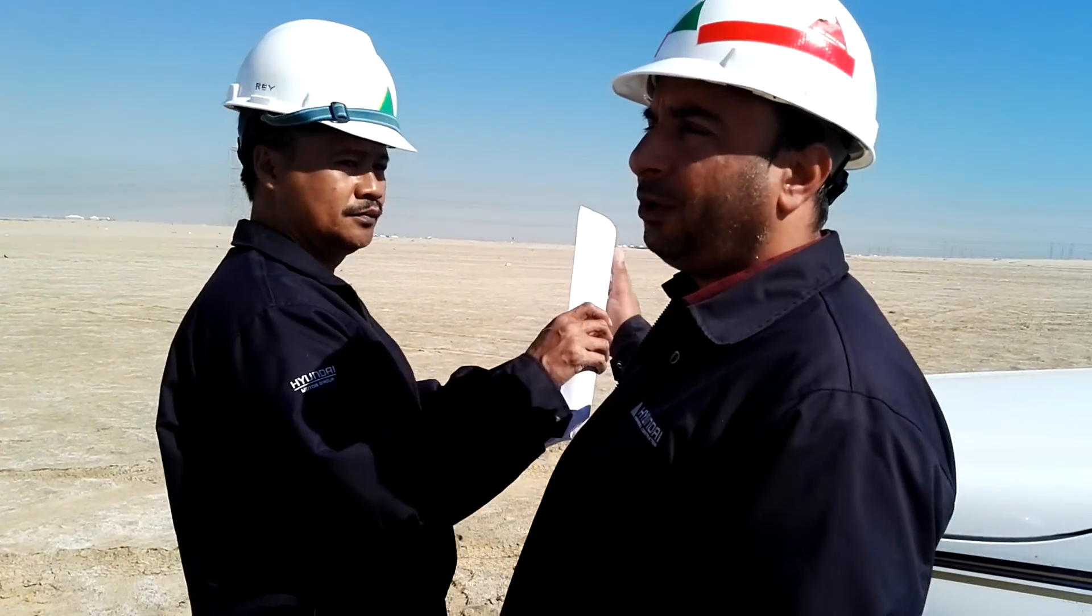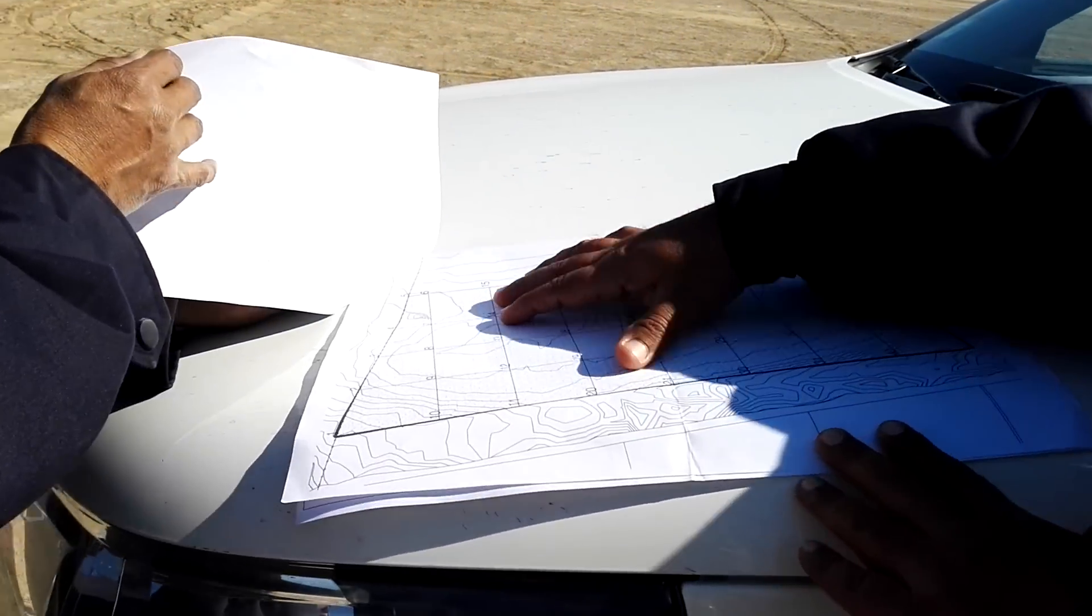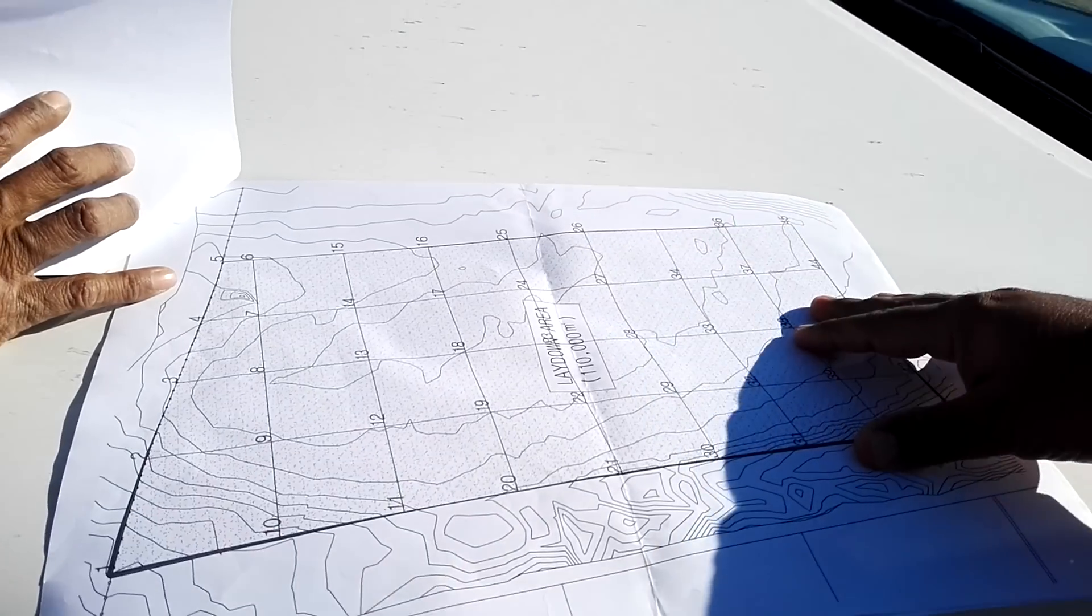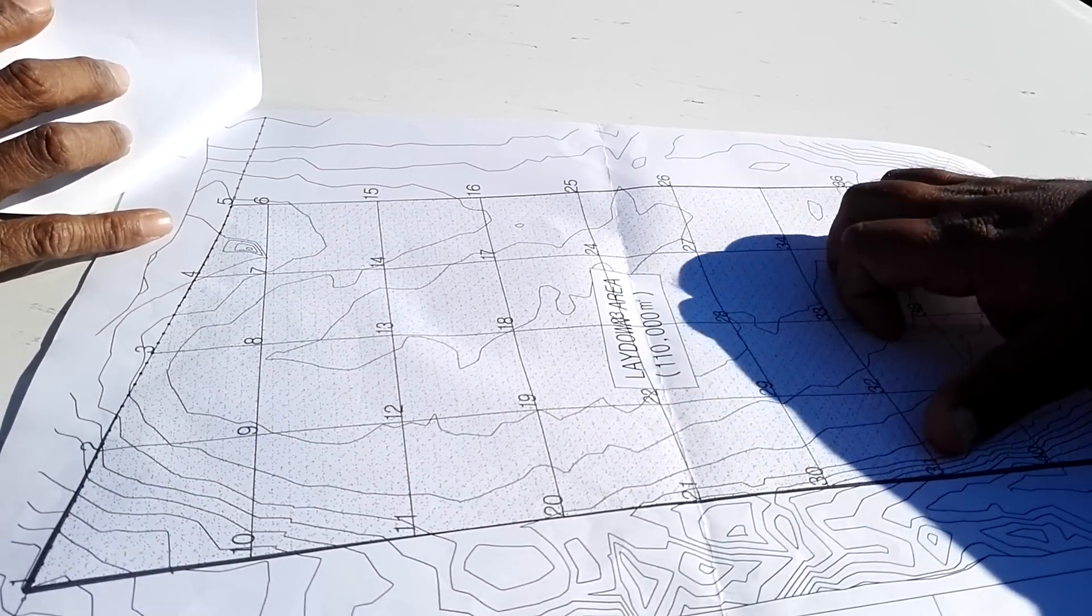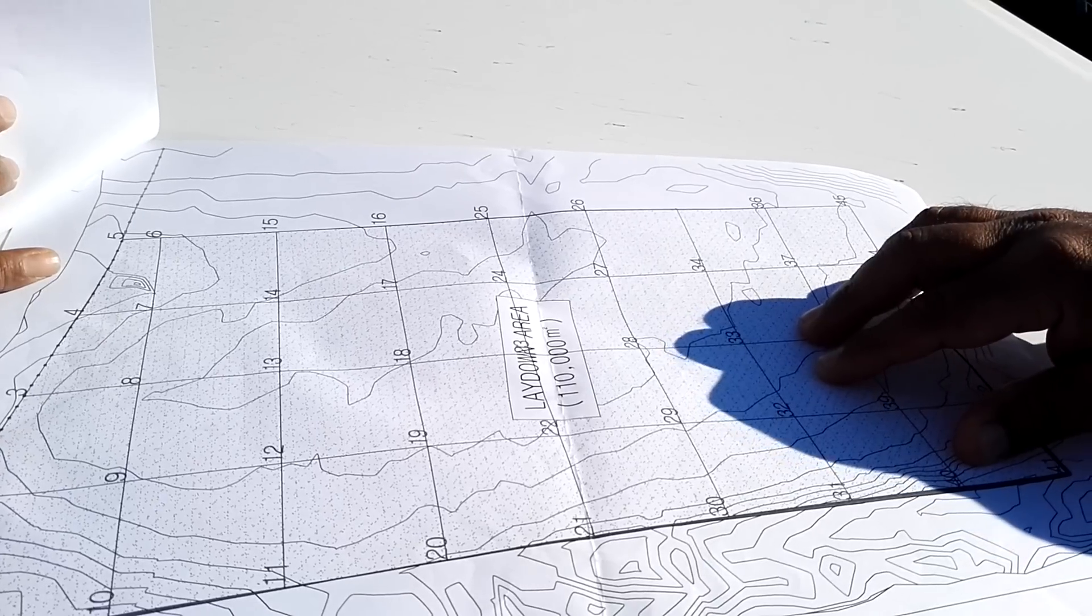So before I go to the instrument, I will explain my drawing. So here I have a drawing where I need to be setting out some points. I have this lay down area for me. So I will just explain only one point, how we can set out the points with the instrument.